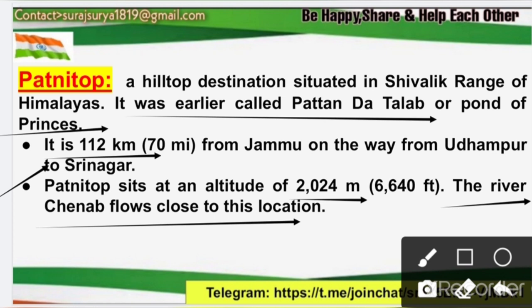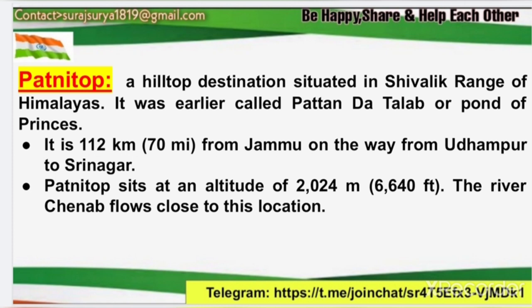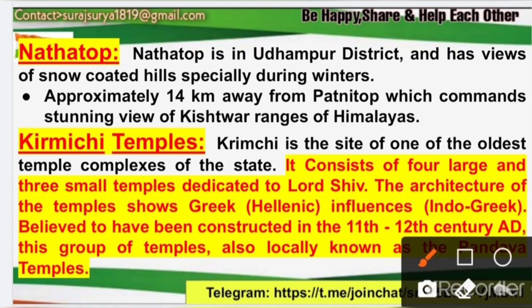The second important tourist destination in Udhampur district is Nathatop. Nathatop is located in Udhampur district. It is one of those hills that remain snow-covered during winters. It is approximately 14 kilometers from Patnitop. From the top of Nathatop, you can get a very spectacular view of the Kishtwar Range — all the mountains and Himalayas in Kishtwar district are clearly visible from there.